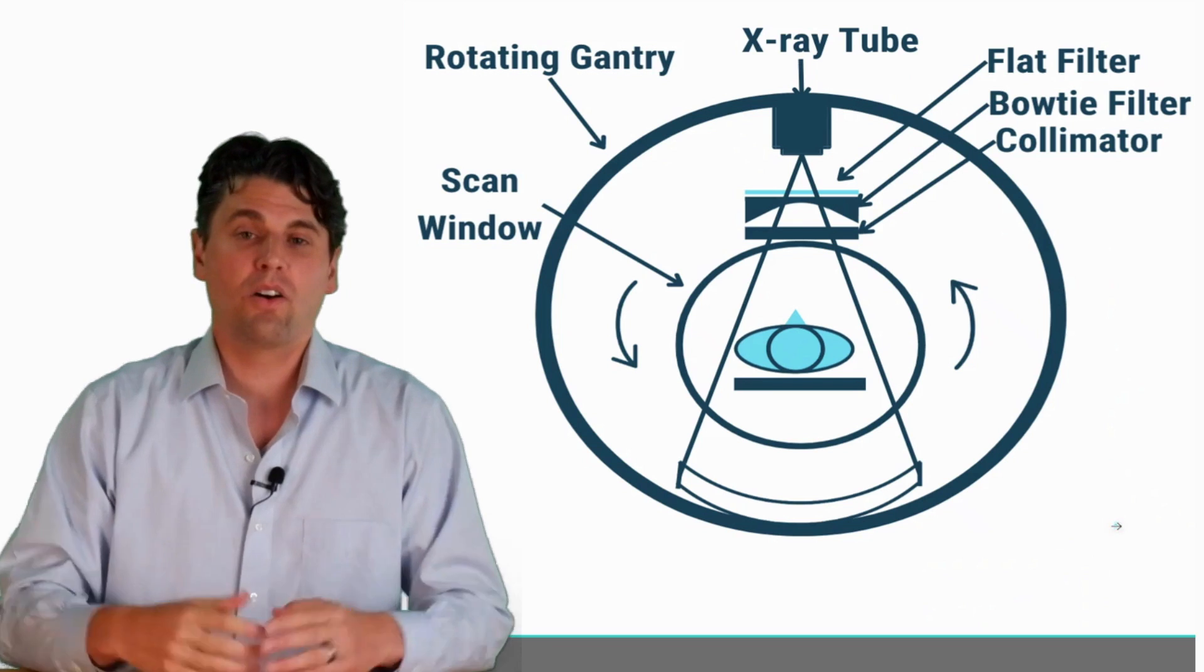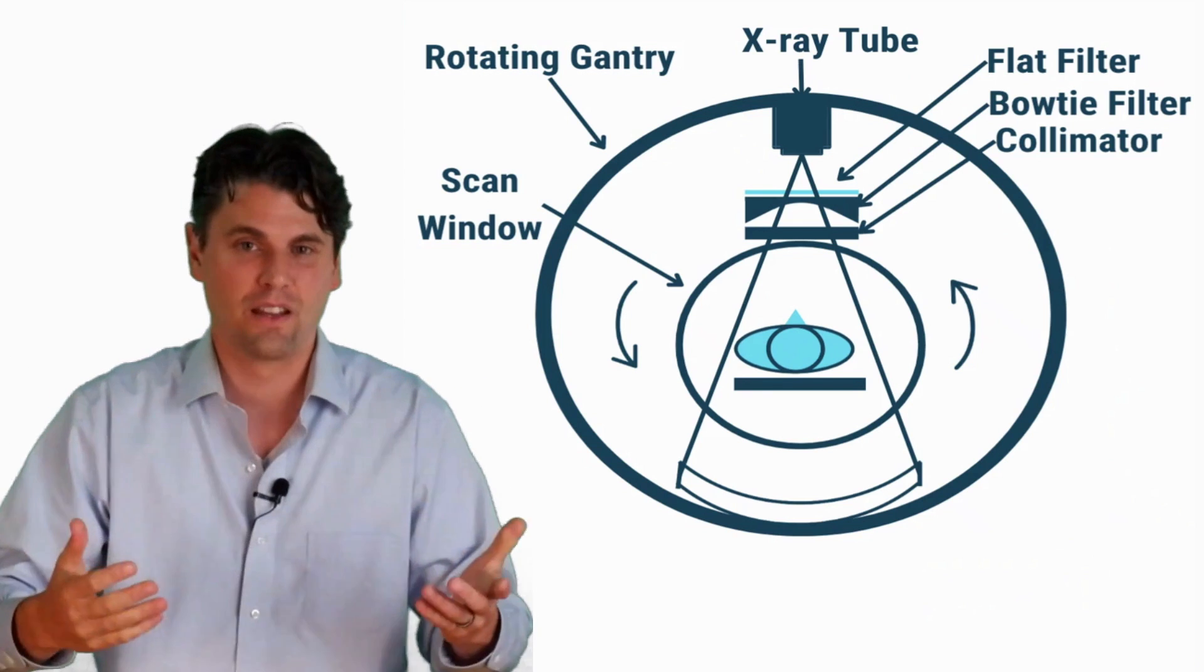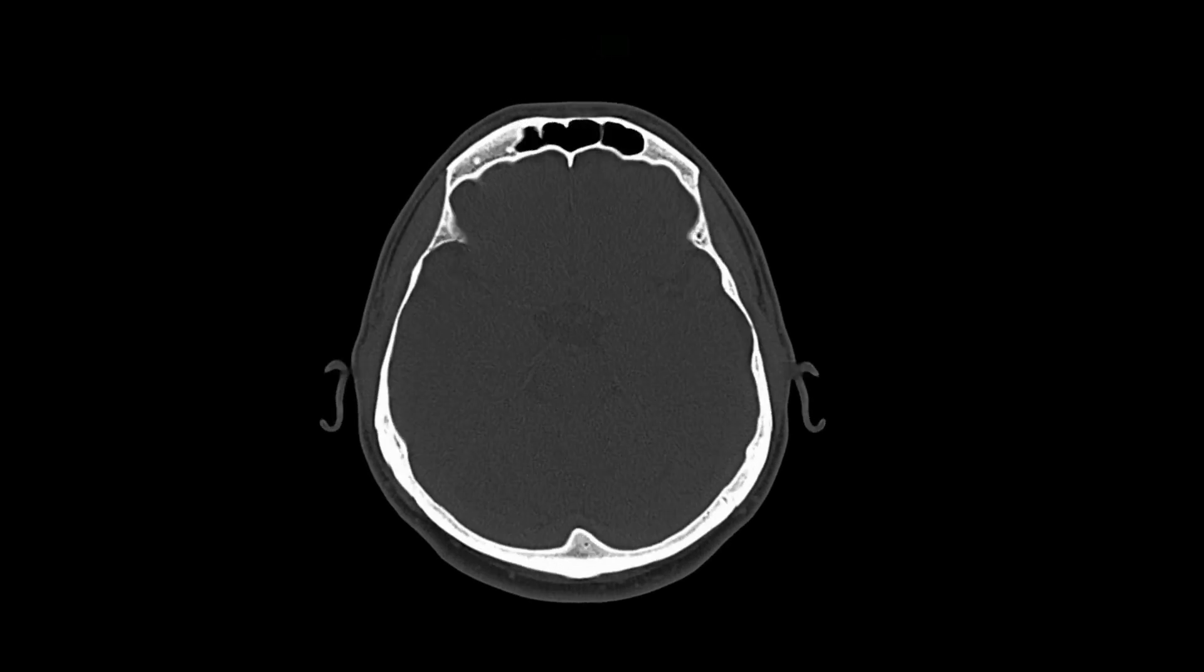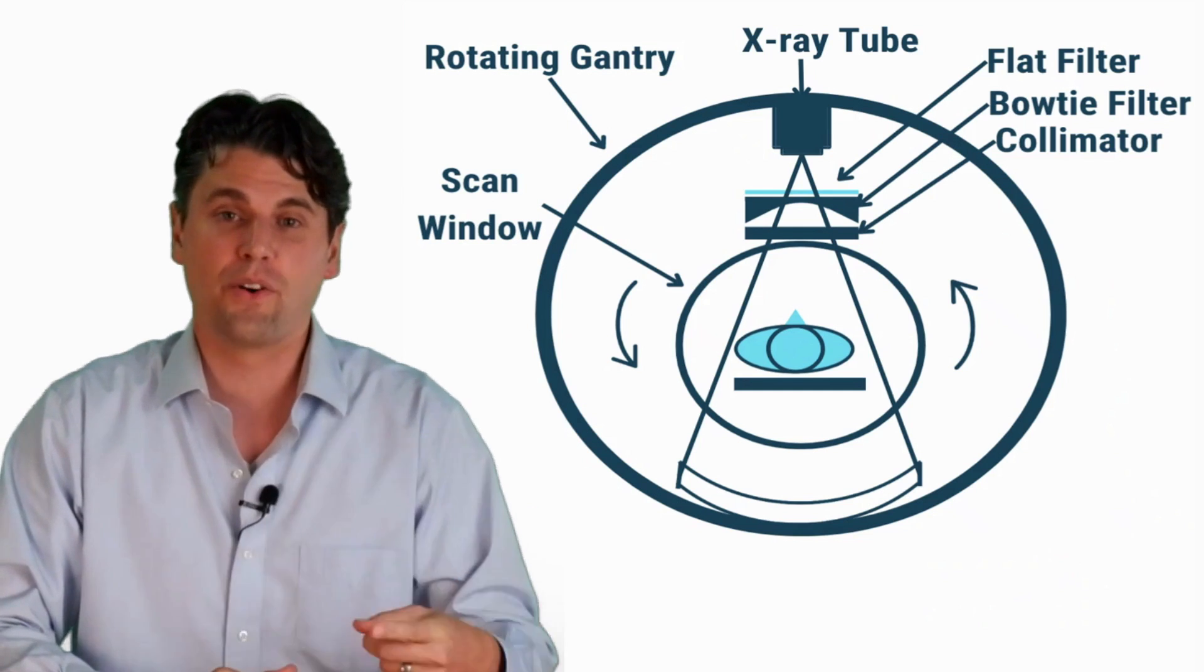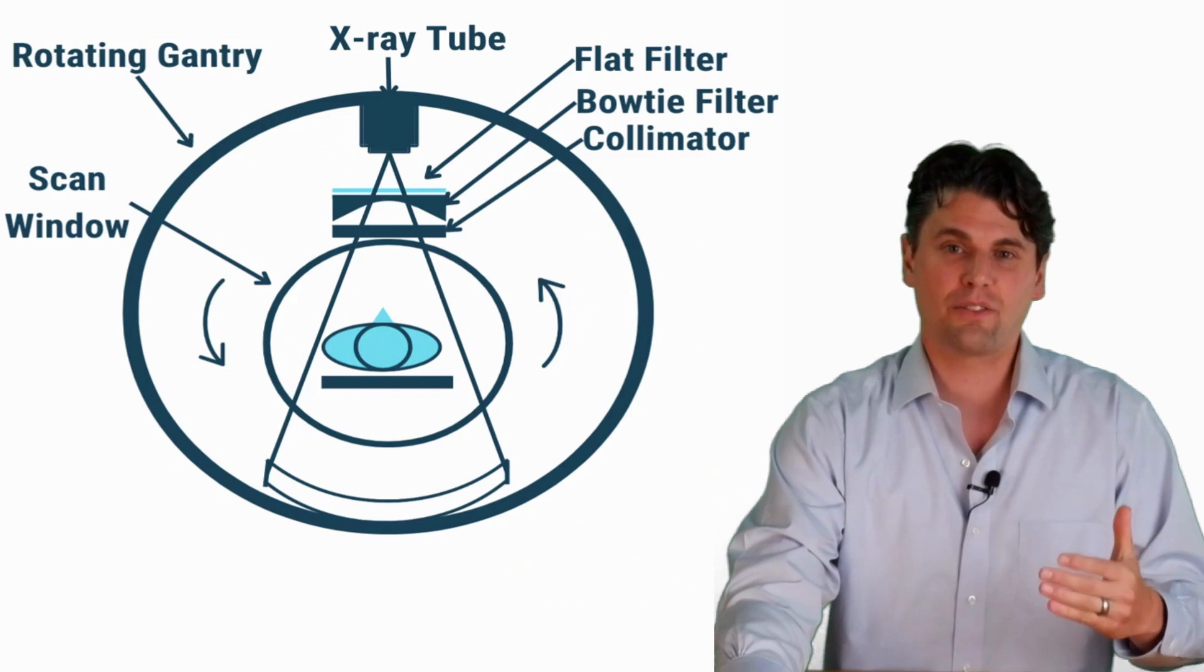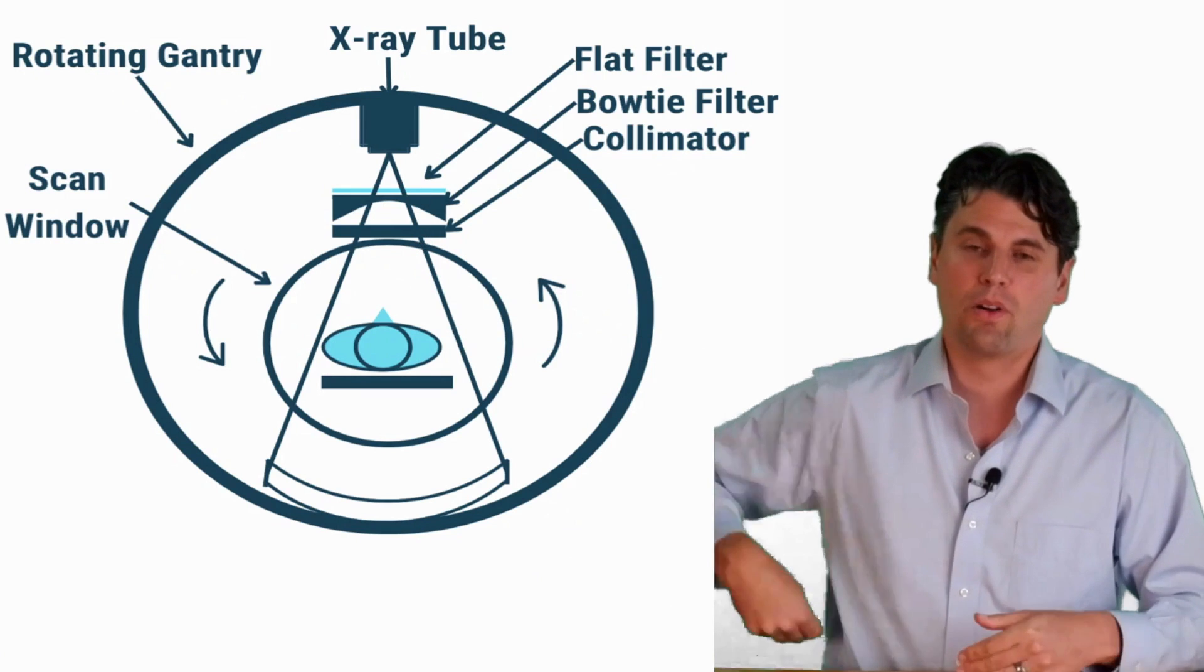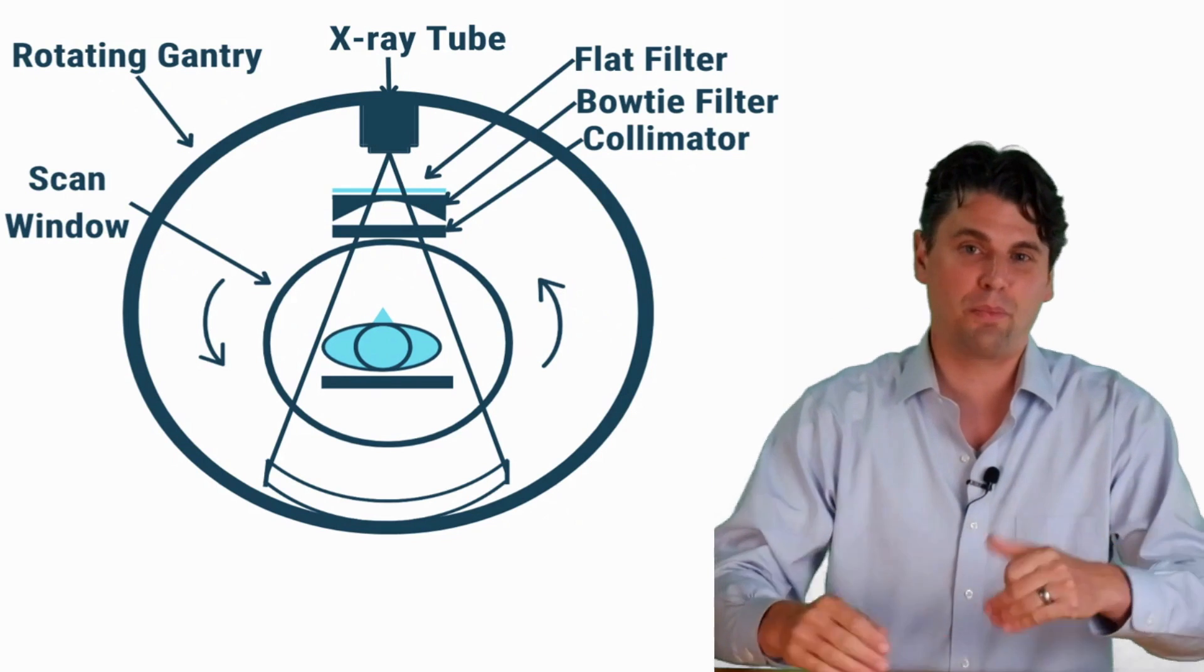After you get through the scan window now the x-rays can finally go through the patient. So this is where we've talked about before you have differential contrast between the different types of materials and that's what's going to help you generate your CT image via photoelectric and Compton interactions in the patient. And depending on where the x-ray tube is, if the x-ray tube is in this position it's going to be passing through the patient first and then through the table. When the x-ray tube comes around it's going to be passing through the table first and then through the patient.